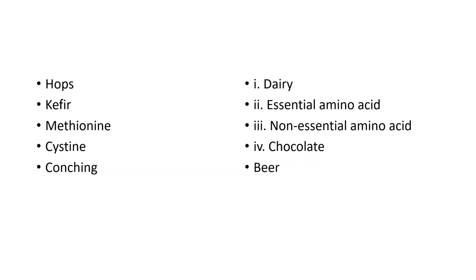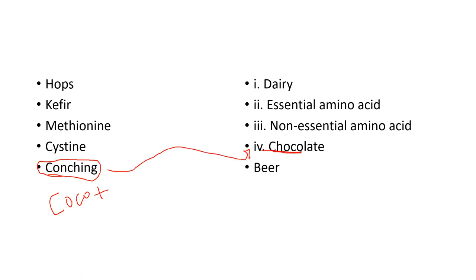Conching is a process where cocoa, butters, and sugars are mixed together to get the final product — chocolate. So remember: conching is associated with chocolate. In exams you'll be tested objectively, so if you know that conching is associated with chocolate, you can answer it comfortably.